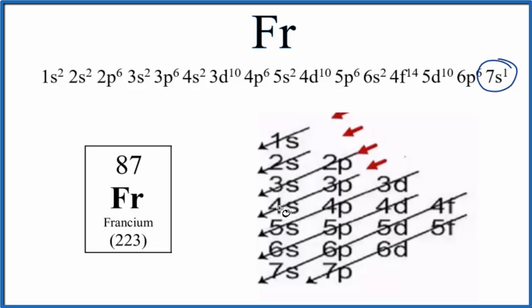3S2, 3P6, 4S2. After 4S2, we go to 3D10. So 3D, the D orbitals, they hold up to 10. So we go from 3D10, 4P6, 5S2, 4D10, 5P6, 6S2.